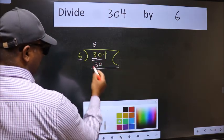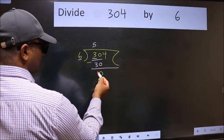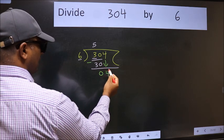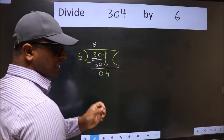Now we should subtract. We get 0. After this, bring down the next number. So 4 comes down. After this step, the mistake happens.